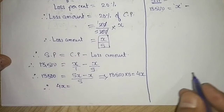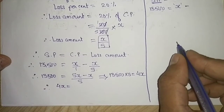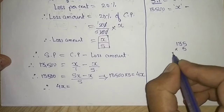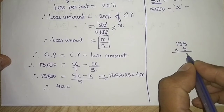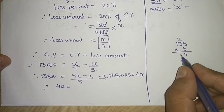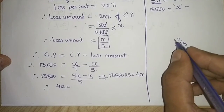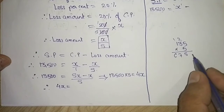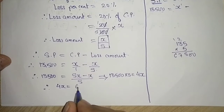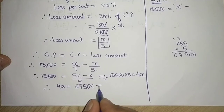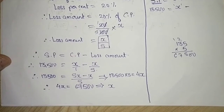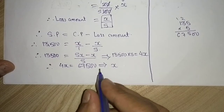Multiplying both sides by 5: 13,500 multiplied by 5 equals 4x. Calculating 135 multiplied by 5: 5 fives are 25, carry 2; 5 threes are 15, plus 2 is 17, carry 1; 5 ones are 5, plus 1 is 6. So 13,500 times 5 equals 67,500. Therefore 4x equals 67,500.